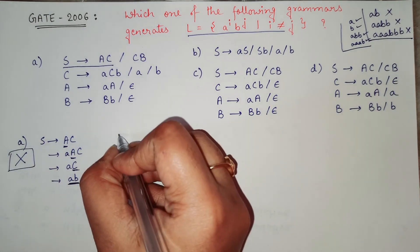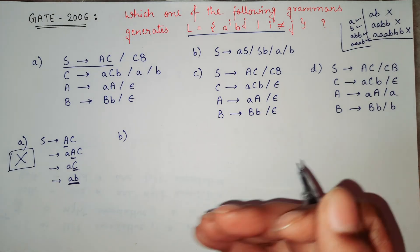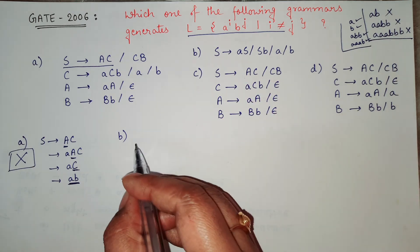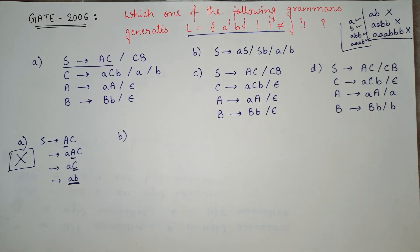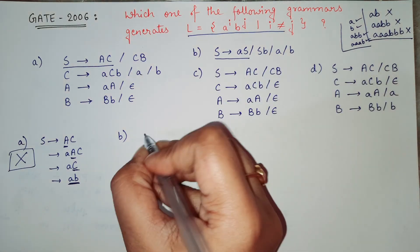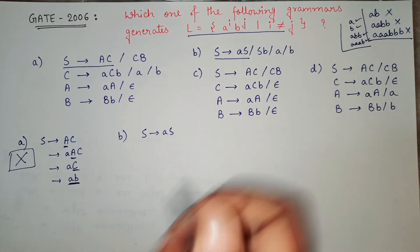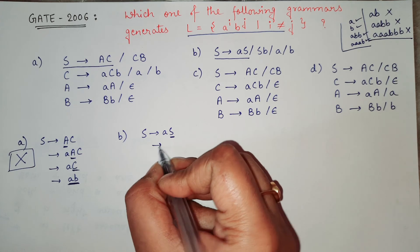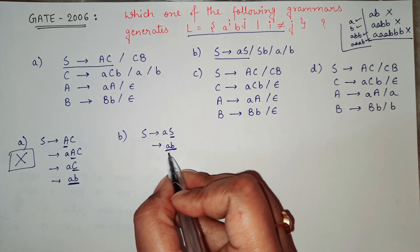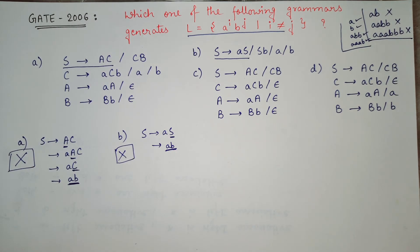Now let's check option B. Taking S → aS, and then replacing S with b, we get 'ab' again — equal number of a's and b's. So option B also cannot be the correct answer.